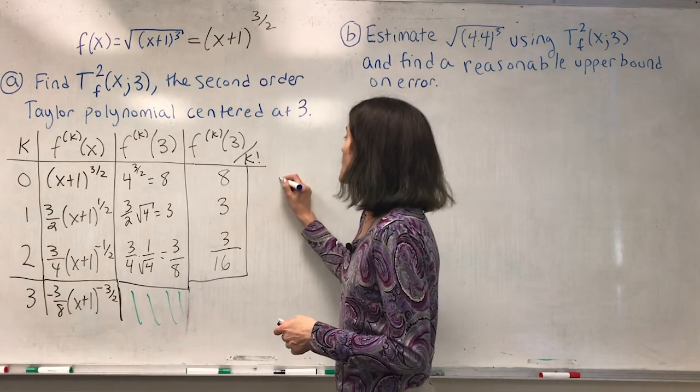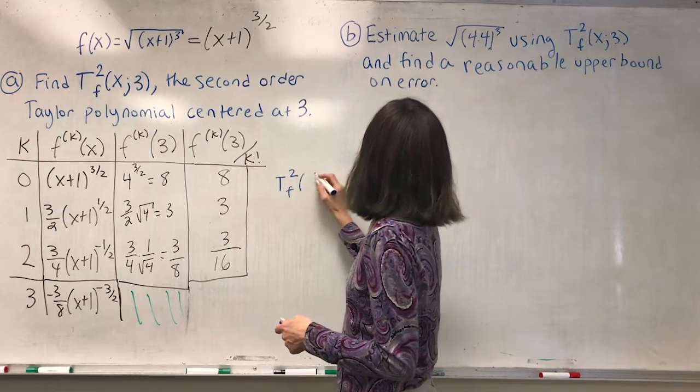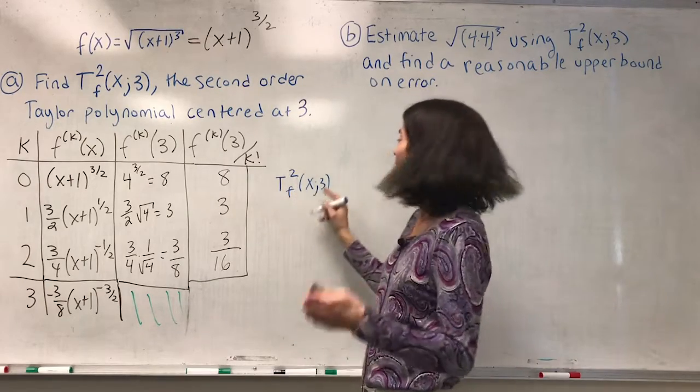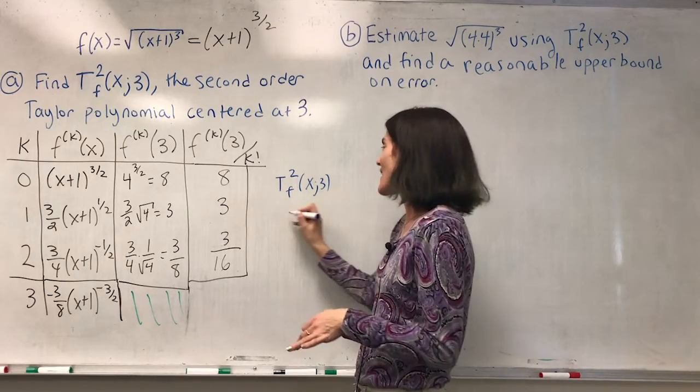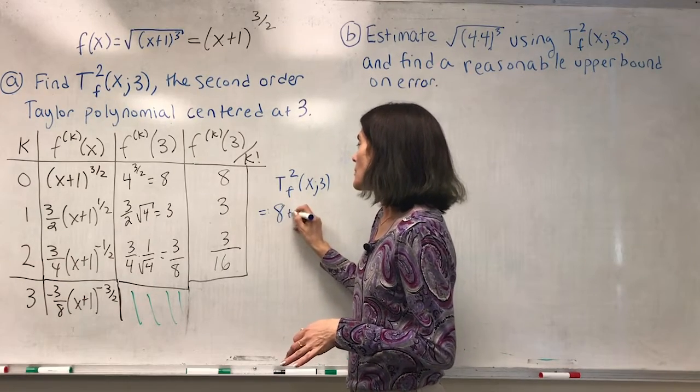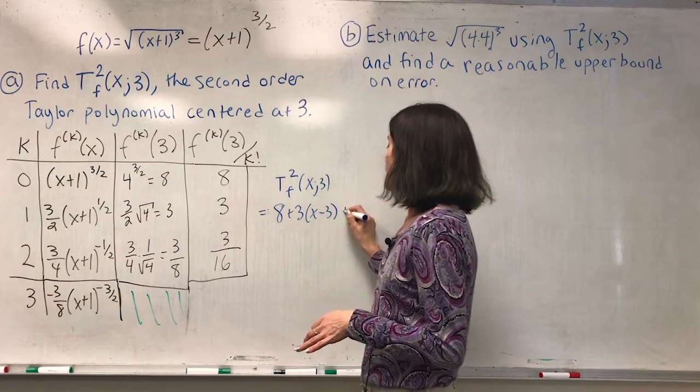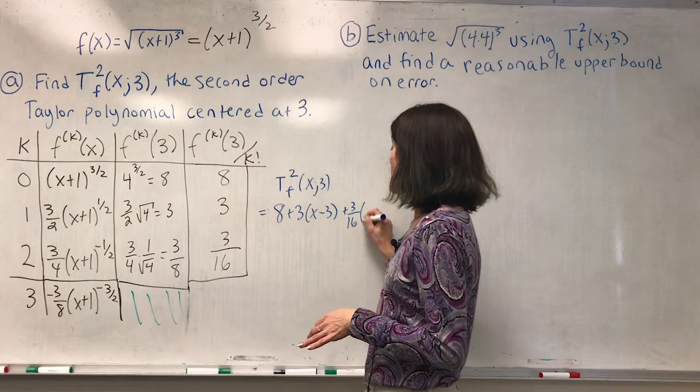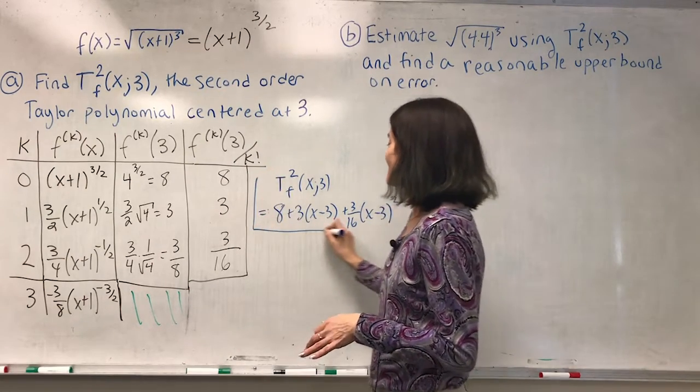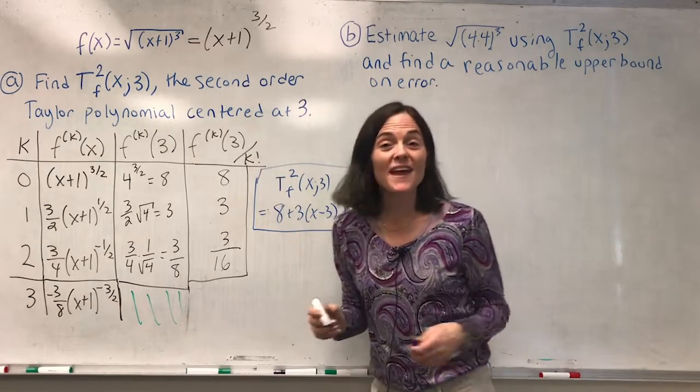Now I can write my polynomial. T₂(f, 3), which stands for the second order Taylor polynomial of this function centered at 3, equals 8 plus 3(x minus 3) plus 3 over 16 (x minus 3) squared. This is part A.